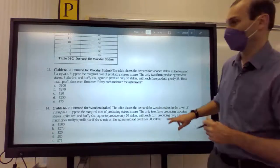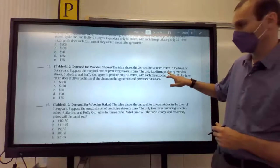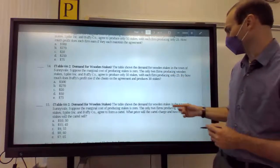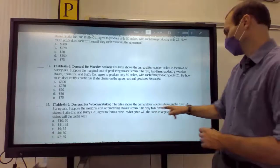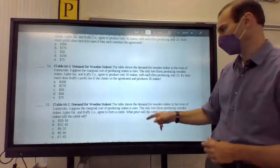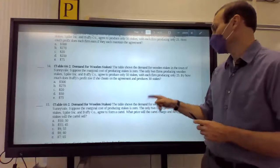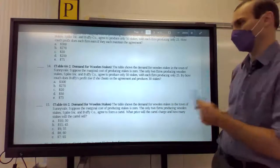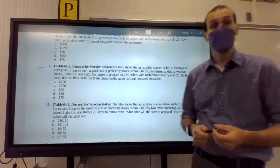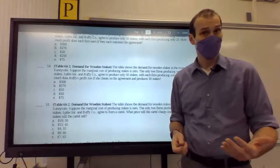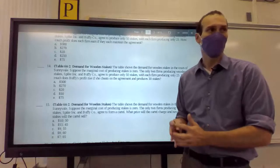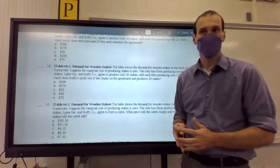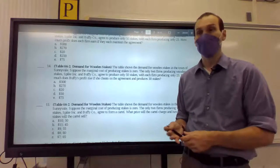That's good. All right. And let's do 15. All right. The table shows the demand for wooden stakes in town of Sunnydale. Suppose the marginal cost of producing stakes is zero again. The only two firms produce wooden stakes. Spike and Buffy Co. form a cartel. What price will the cartel charge? And how many stakes will the cartel sell? So, how can they maximize profits? Hint. They're a zero cost firm. So, they just want to do what? Maximize total revenue. By the way, when total revenue is maximized, marginal revenue is?